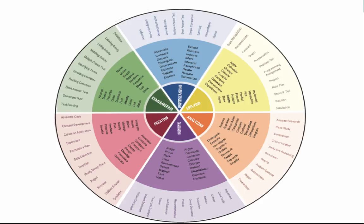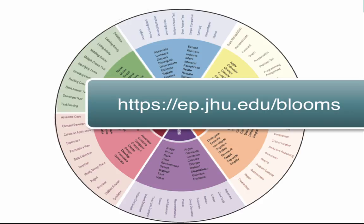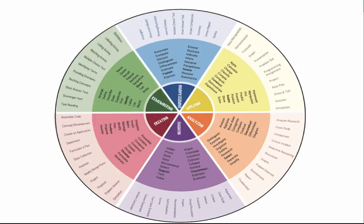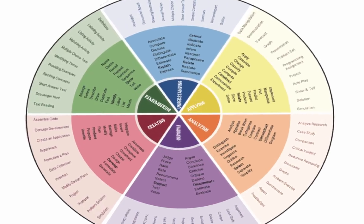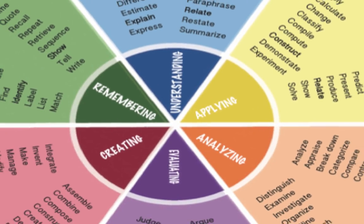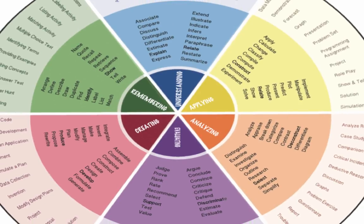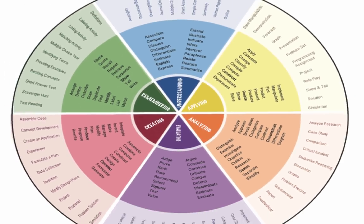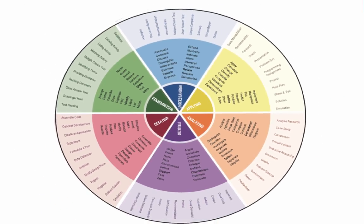So let's take a look at the Bloom's Wheel. This helpful tool is available to you online — simply point your browser to ep.jhu.edu/blooms and you'll be able to download a PDF of this tool. The wheel contains six levels of learning or cognitive domains in the center, suggested measurable action verbs for each domain, and a few examples of learning activities and assessments that fall within each domain.